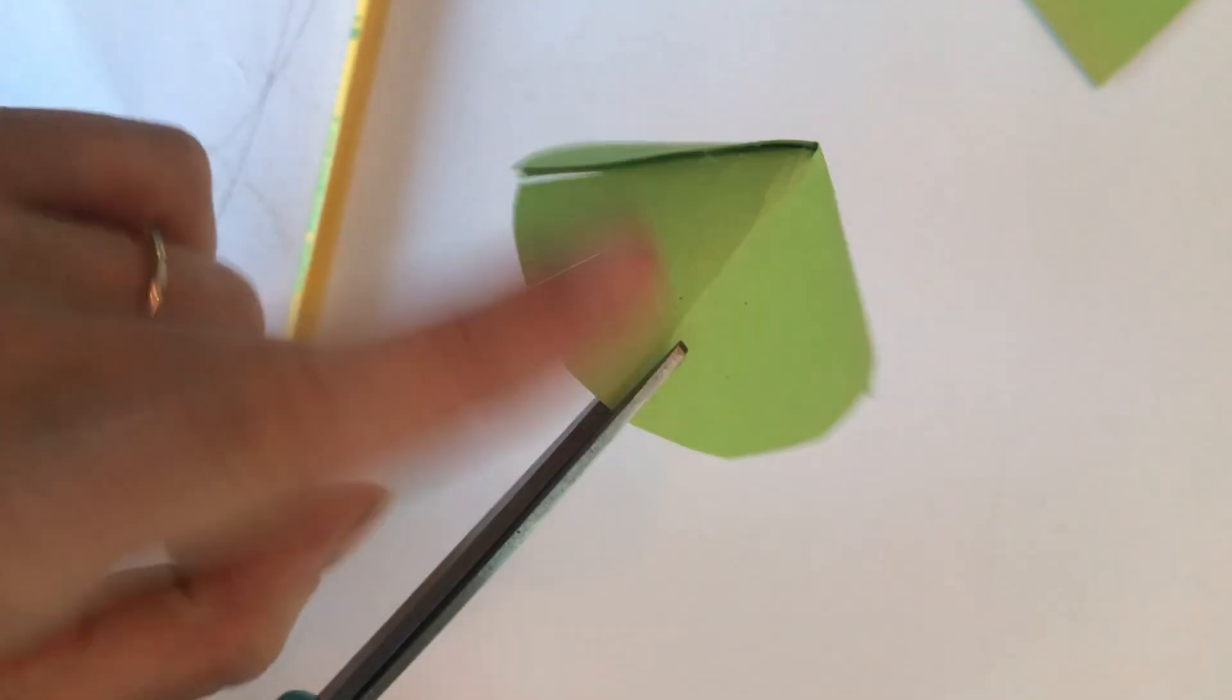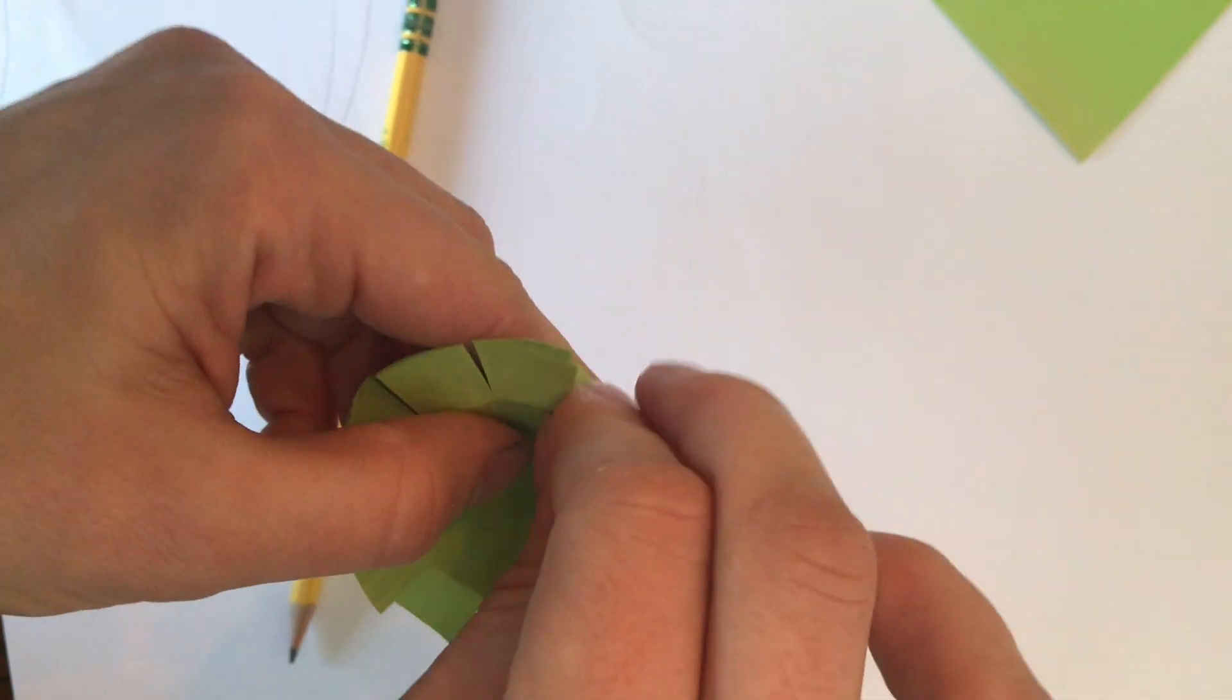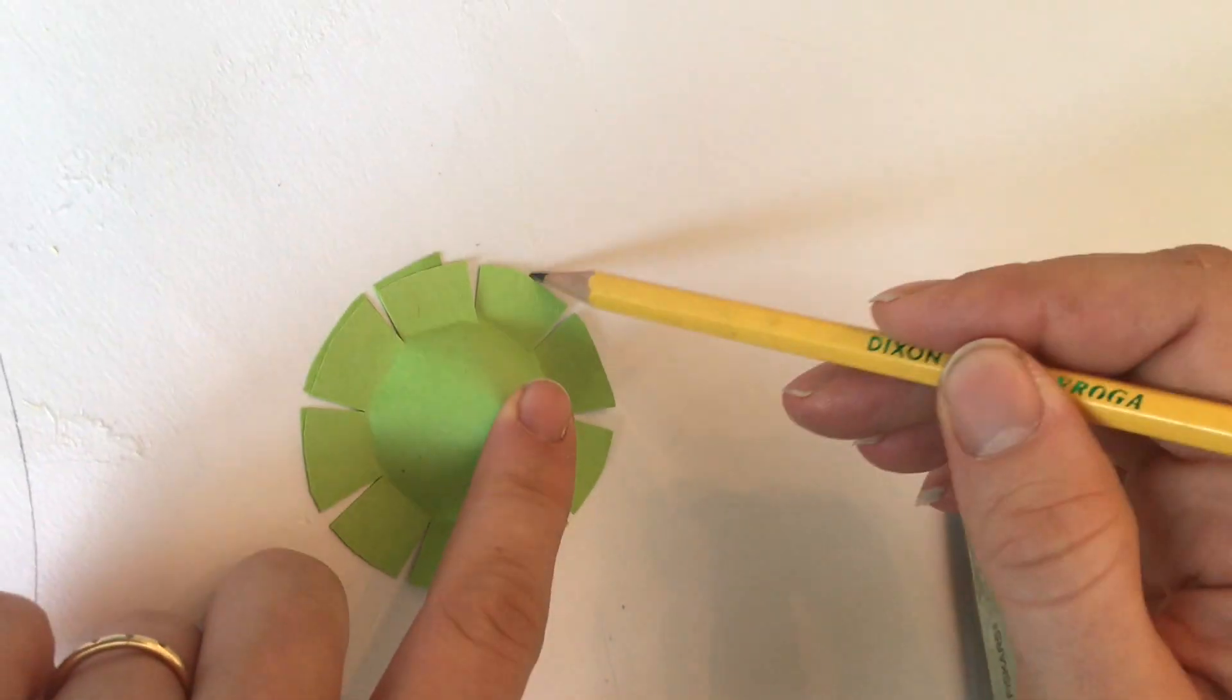Now just like the cylinder I want it to be attached to the paper somehow so I'm going to add tabs all the way around. Fold them out and I'll have a really cool strong base.